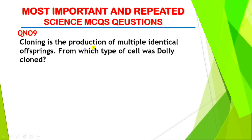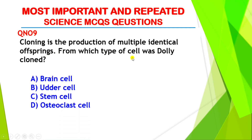Question number nine: cloning is the production of multiple identical offspring. From which type of cell was Dolly cloned? The right answer is option B, somatic cell. Cloning is a method in which similar living beings are produced without natural reproduction. Dolly was the world's first cloned sheep, produced in 1996, and was cloned from a somatic cell — specifically a cell from the udder (mammary gland) of the body.